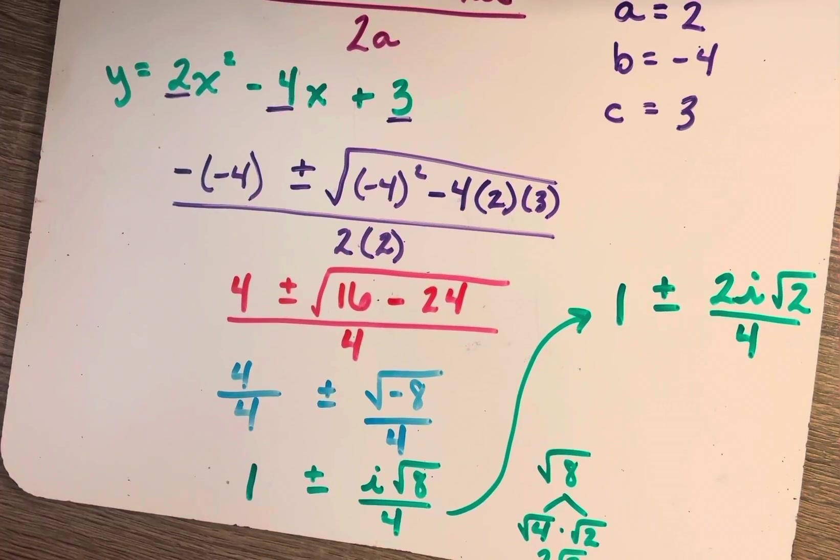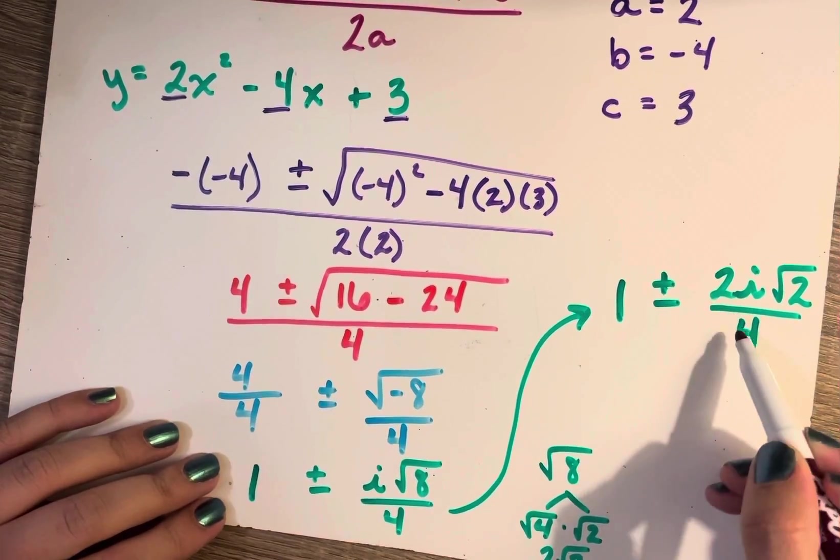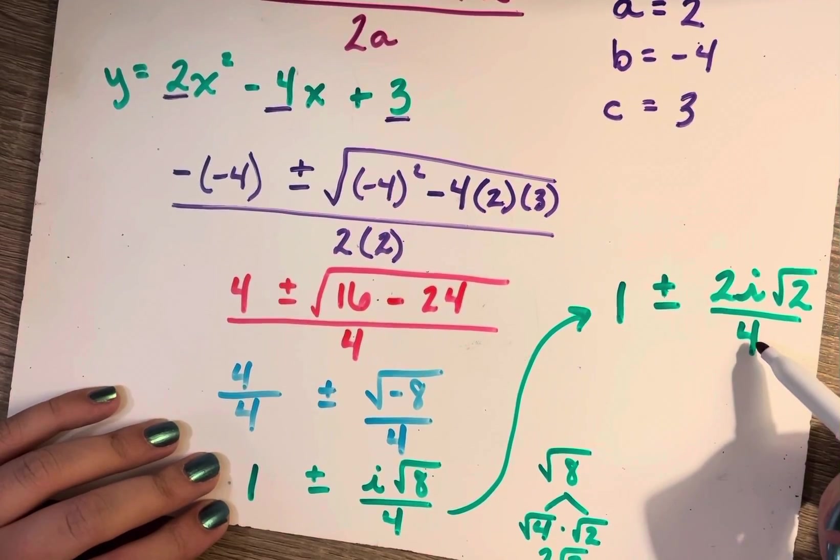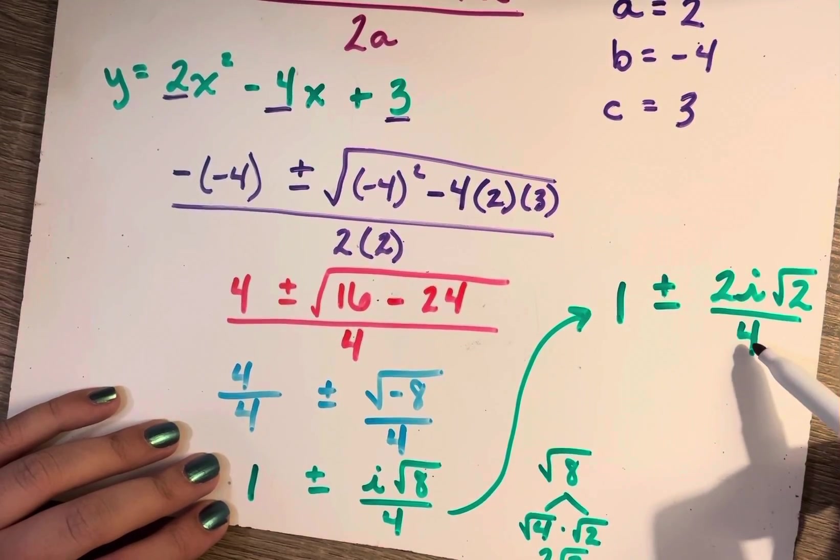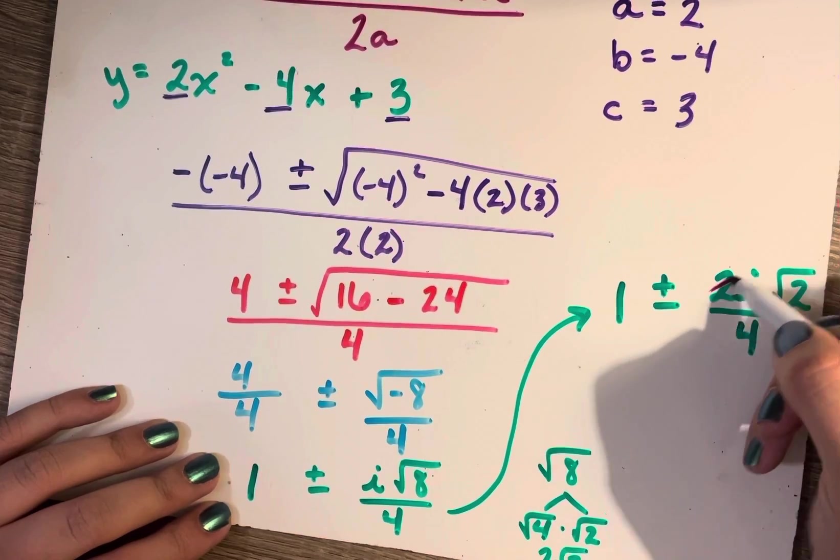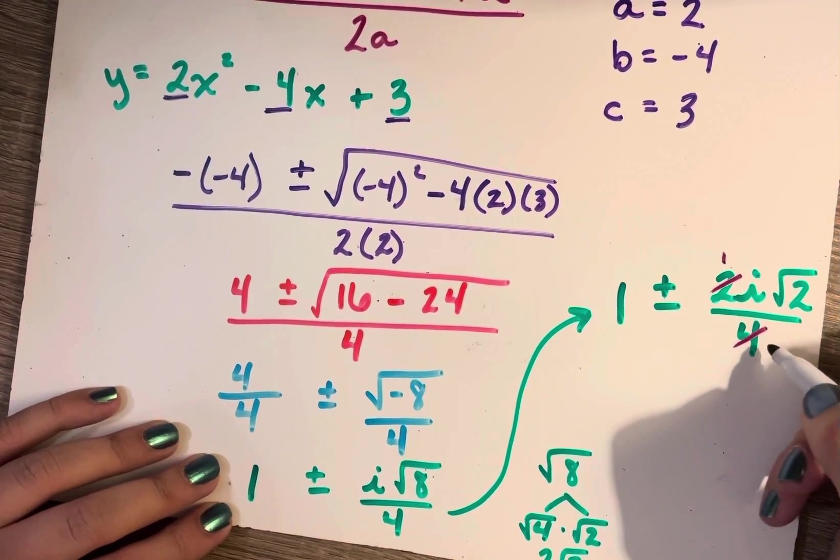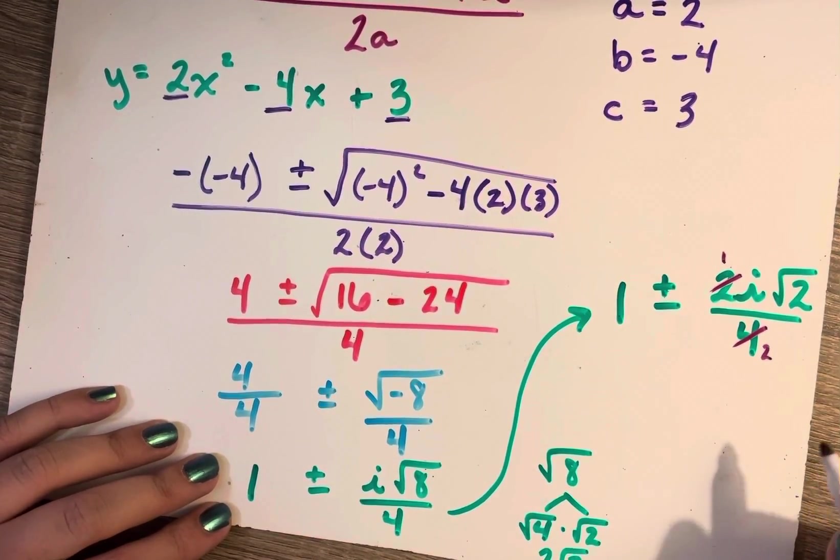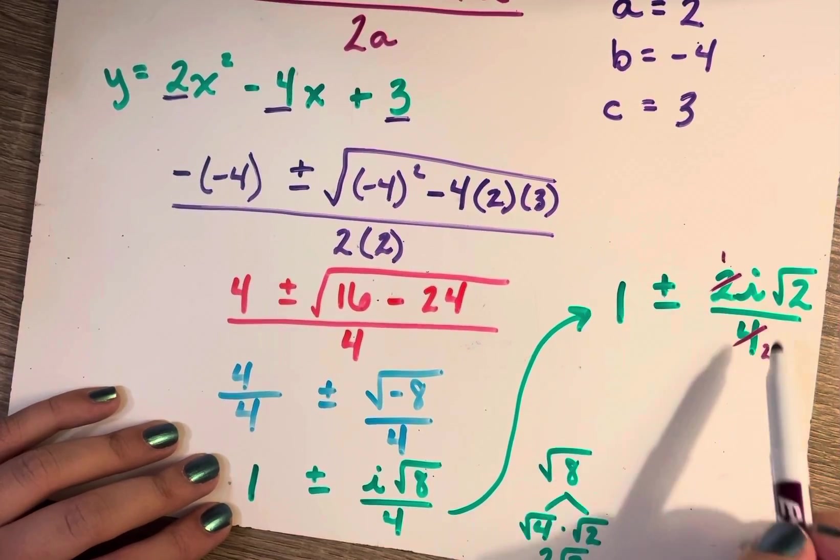And that's still divided by 4. Okay, we're almost done. Final, final step. I can simplify a little bit more here. 2 over 4 can be simplified because 2 is a factor of 4. So this I can simplify as 1 over 2.